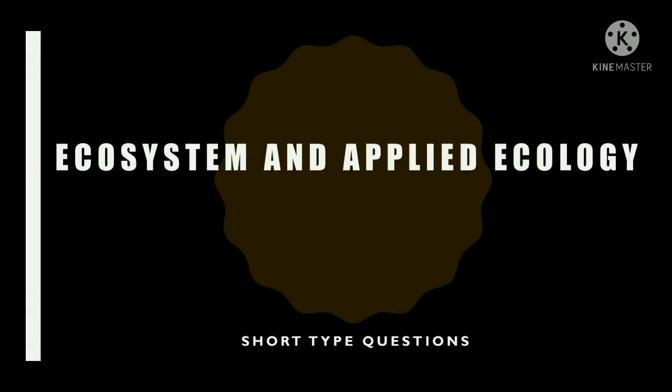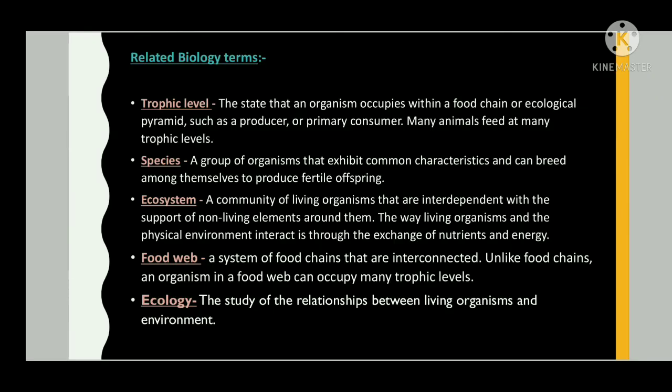This video is part 2 of ecosystem and applied ecology. Some related biology terms: trophic level — the state that an organism occupies within a food chain or ecological pyramid, such as a producer or primary consumer. Many animals feed at many trophic levels. Species — a group of organisms that exhibit common characteristics and can breed among themselves to produce fertile offspring.